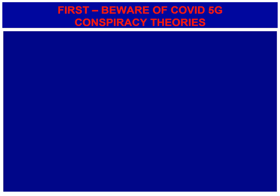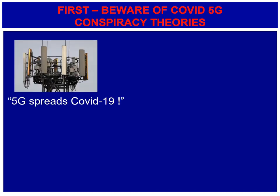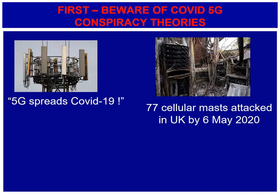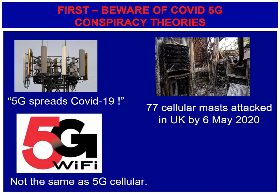I really need to start this lecture in an unusual way. Because we're in the midst of a COVID pandemic, I have to say just a little bit about the COVID 5G conspiracy theories that have been going viral around the world. First of all, 5G does not spread COVID-19. It does not spread it through the air. It does not mutate your DNA. Unfortunately, by the 6th of May 2020, 77 base stations had been attacked or burnt. Many engineers had also been attacked who were installing or repairing these masts. And 5G Wi-Fi has absolutely nothing to do with 5G cellular. 5G Wi-Fi refers to the frequency 5 gigahertz.